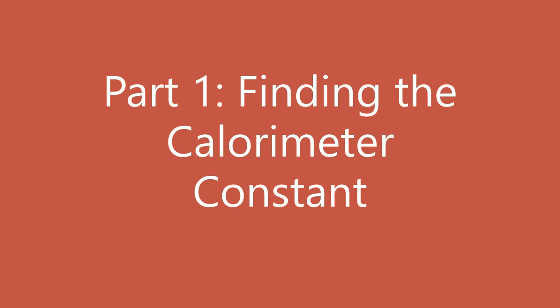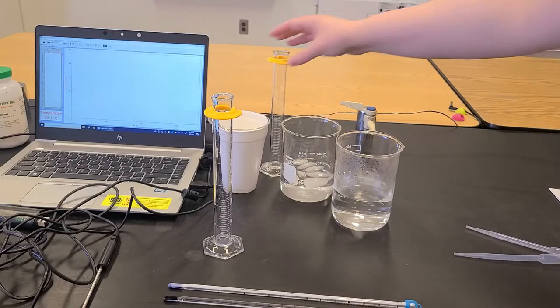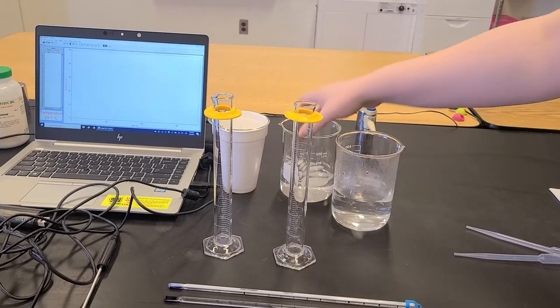So first we need to determine the calorimeter constant, which is the amount of heat that is absorbed by the calorimeter itself when a process goes on inside.